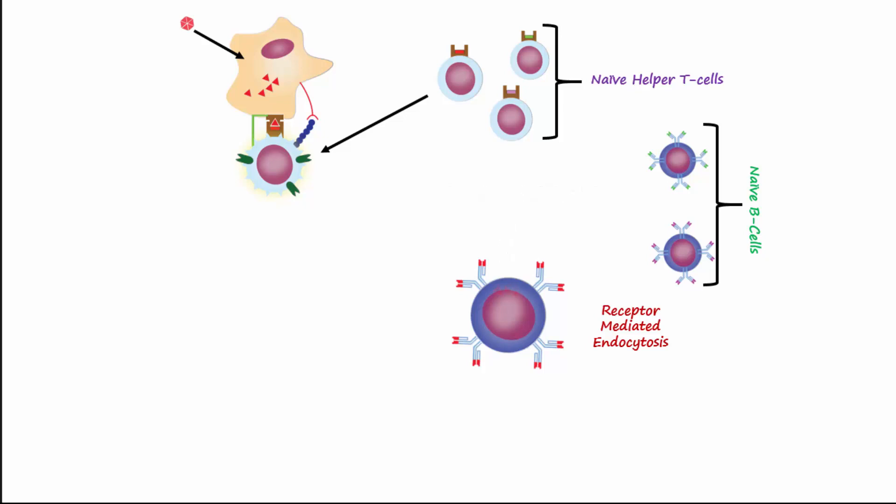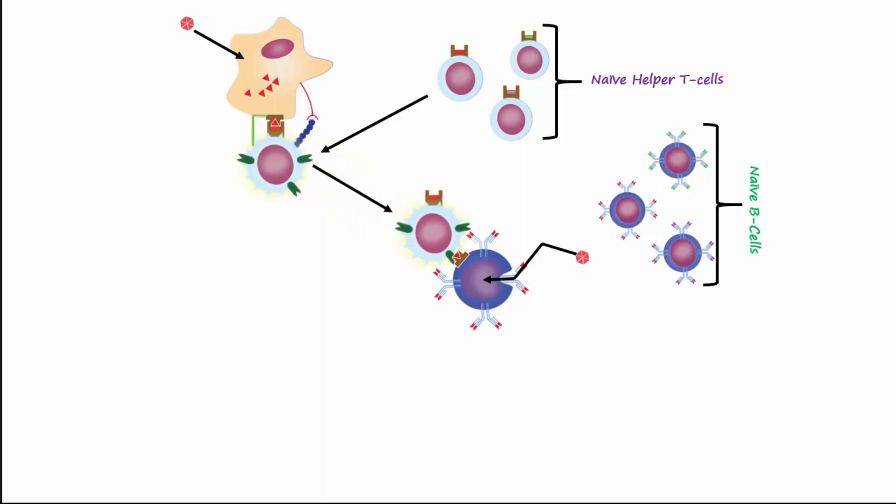The matching antigen enters the B cell by way of receptor-mediated endocytosis. Once inside the cell, the antigen is broken down into peptide fragments that are expressed on the surface of the B cell using MHC class 2 molecules. The B cell gets its second signal for activation from the activated helper T cell that we previously described.